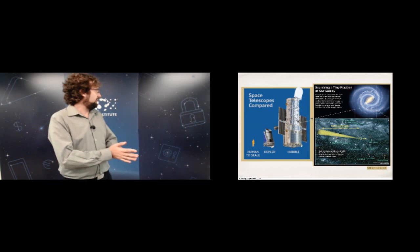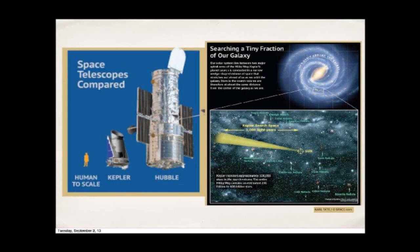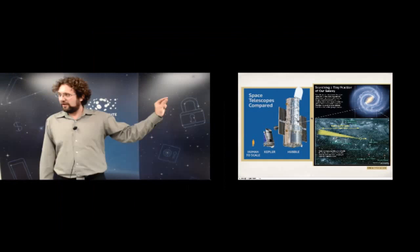A graphic from space.com shows the scales involved with Kepler as a survey instrument. The Kepler instrument is quite large compared to, say, the 2.5-meter Hubble or a person. In terms of how much of the galaxy we're exploring, it's a tiny sliver — 100 square degrees is large by instrument standards, but in terms of survey space, it's tiny.